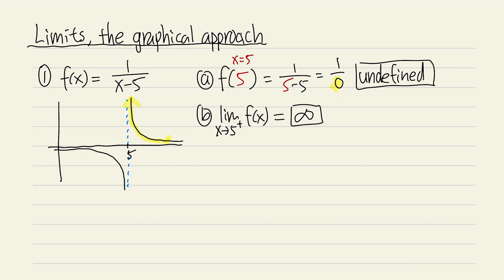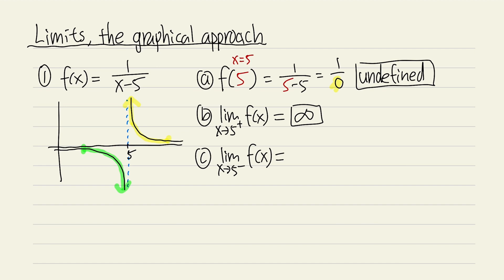Now for part c: the limit as x approaches 5 from the negative side — the minus means we come from the left-hand side. Use your left index finger, move toward 5 along the curve, and pay attention to the y value. The curve goes down, down, down, and the y value approaches negative infinity. So the answer for part c is negative infinity.